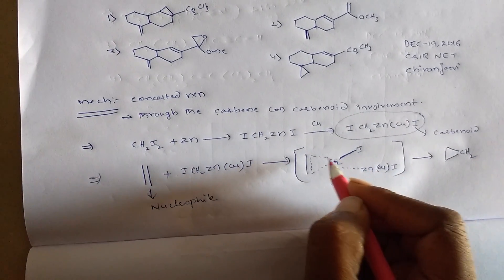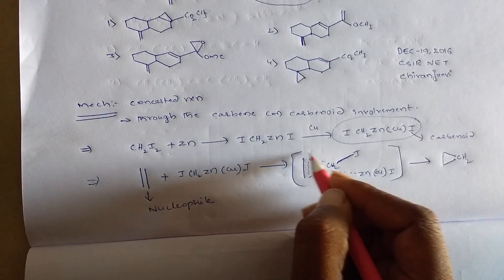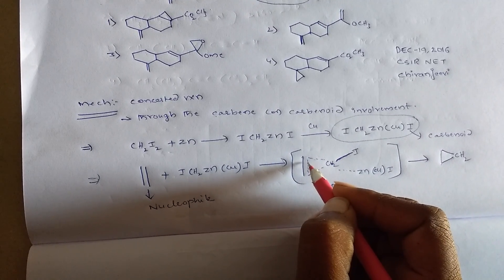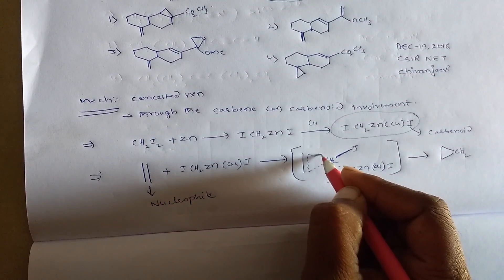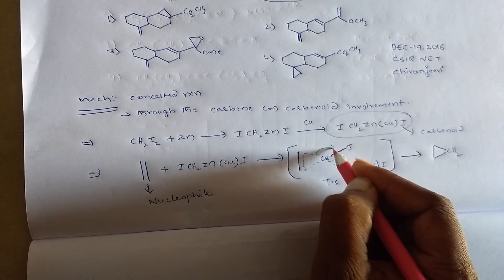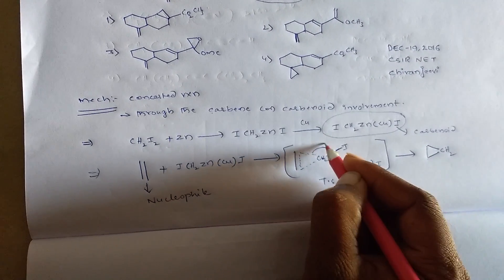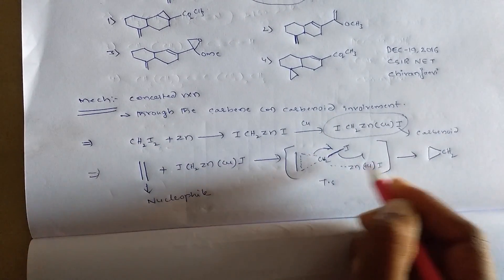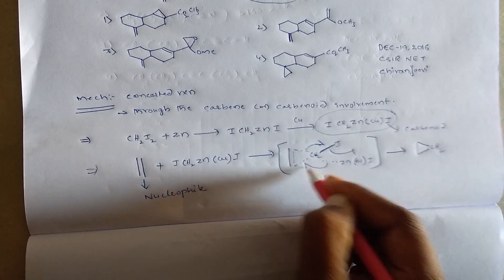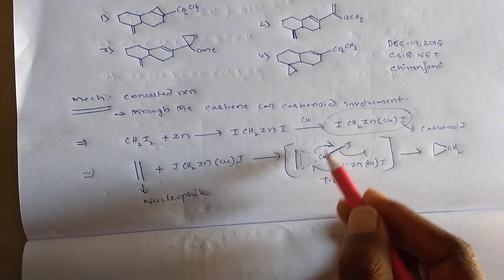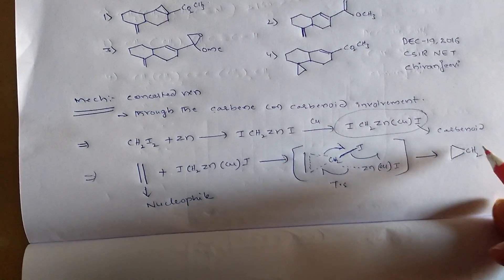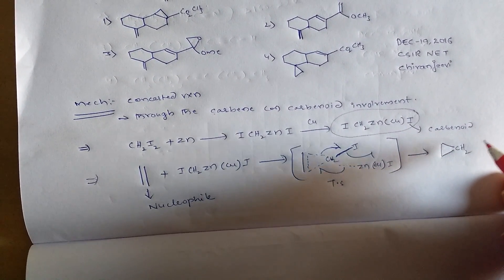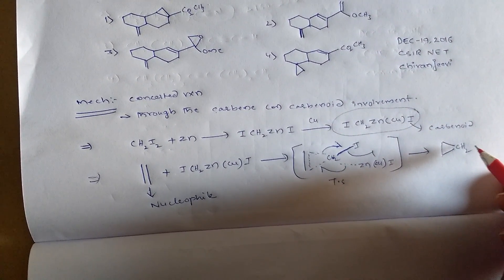So the concerted reaction works like this: the nucleophilic alkene donates its electrons. This is the probable transition state, and from it we can get cyclopropane.